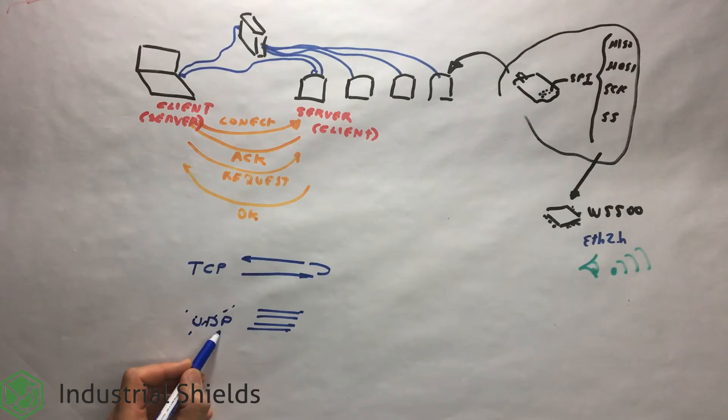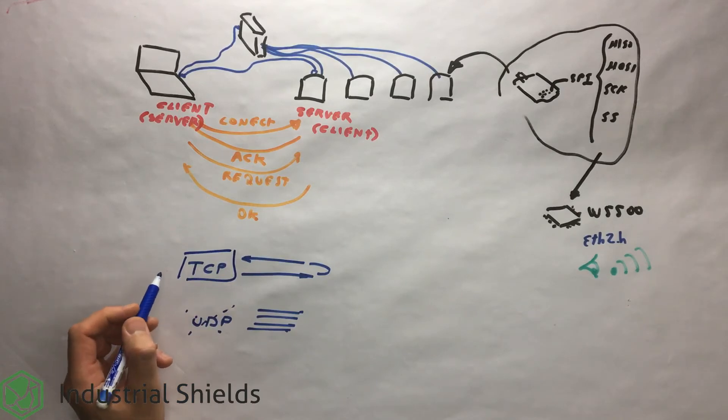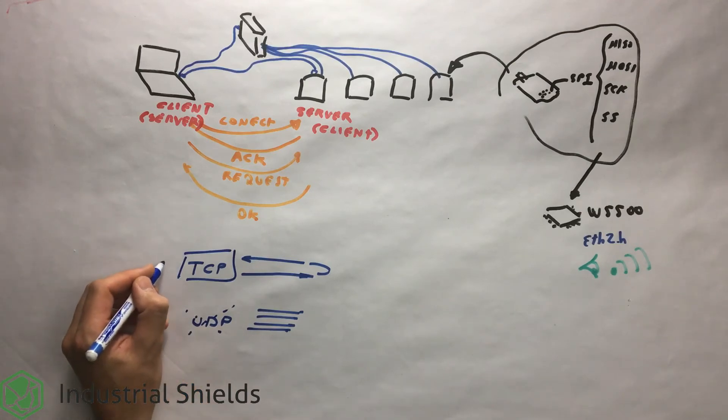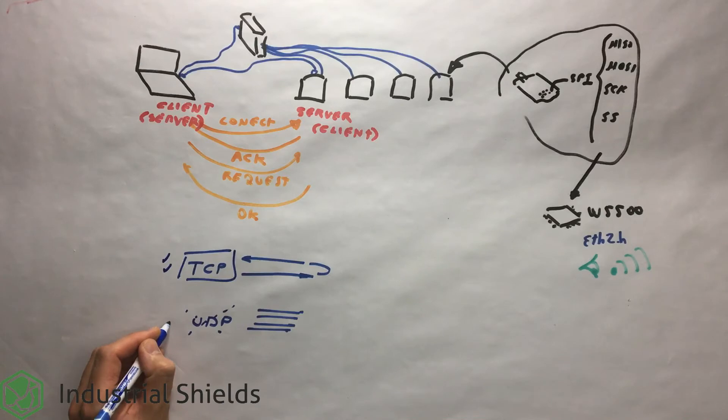It works without connection, that is to say that it does not use any synchronization between the origin and the destination. It works with packets or internal datagrams, not with individual bytes like TCP. An application that uses the UDP protocol exchanges information in the form of blocks of bytes.